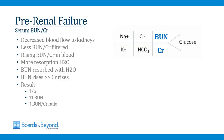Pre-renal failure is the most common cause of acute kidney injury. In pre-renal failure, there's decreased blood flow to the kidneys, which means that less BUN and creatinine are filtered, and therefore the serum levels will rise in the blood. In response to less blood flow, the kidneys will begin reabsorbing more water, and when they reabsorb more water, they will reabsorb more BUN with the water. As a result, although both BUN and creatinine rise, the BUN will rise much more than the creatinine.